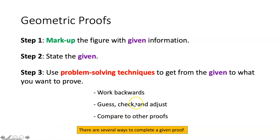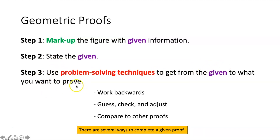Now let's review how to do geometric proofs. First, mark up the figure with the given information — look for anything that states something is congruent or equal to something else. Second, state the given. Third, use problem-solving techniques to get from what we're given to what we're trying to prove, marking up things we could eventually include in our two-column proof.